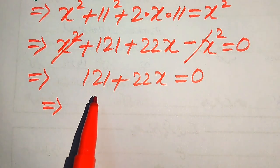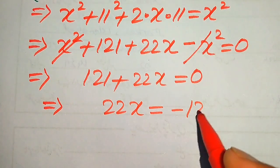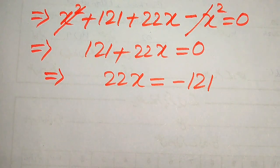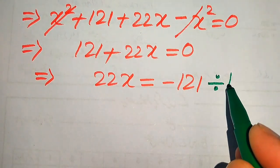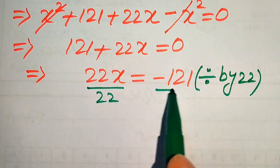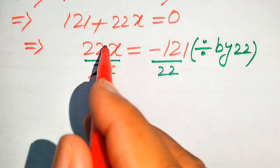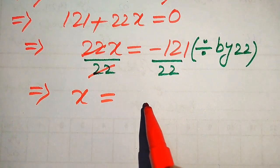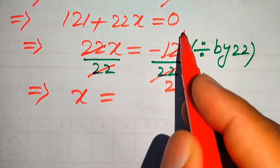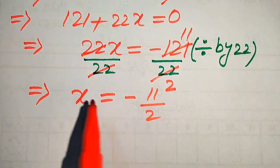Our target is to find the value of x, so we move 121 to the right-hand side: 22x = −121. Now we divide both sides by 22. The 22s cancel, and simplifying −121/22 by dividing by 11, we get x = −11/2.